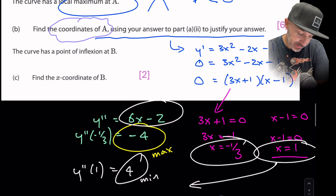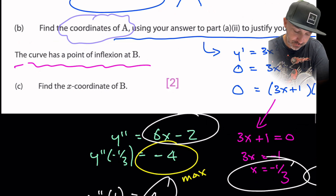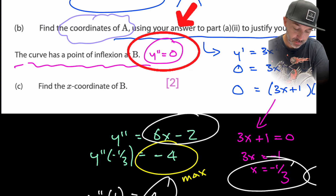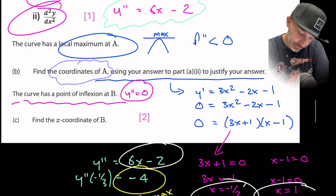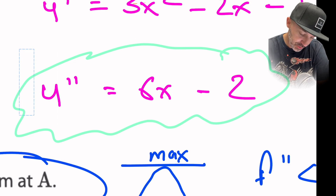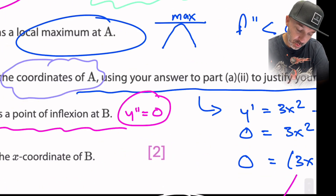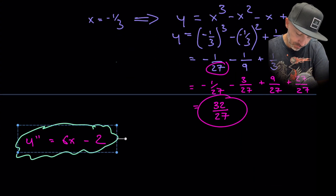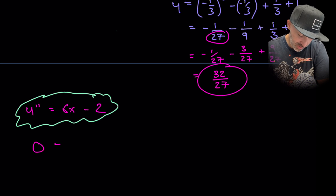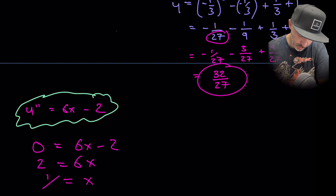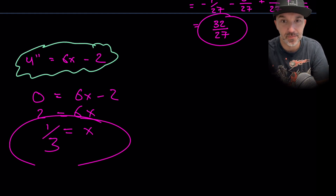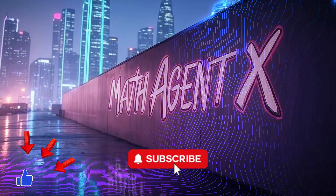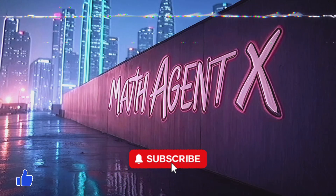The last part states that the curve has a point of inflection at B. A point of inflection occurs when the second derivative equals zero. Using y'' = 6x - 2 and setting it to zero: 6x - 2 = 0, so x = 1/3. The point of inflection occurs at x = positive 1/3. Good luck with your second derivatives — let me know how you get on in the comments, like and subscribe, see you next time.